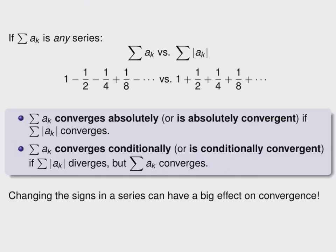The lesson from this is that changing some of the signs in a series can have a big effect on convergence, but in particular, with absolute convergence. If we make a series entirely positive and it still converges, then any way that we put negative signs into the series, the series will still converge. This is the power of absolute convergence. It tells us that many related series all converge.